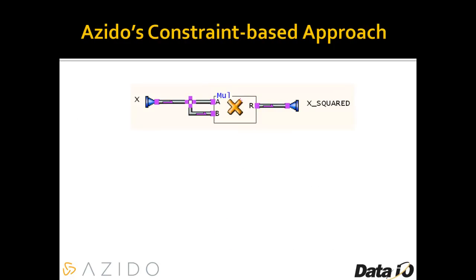Azito was created to work with these different types of systems. And as you can see right away, Azito is a different style of programming language — it's not text-based, it's graphical. Here's our simple squared algorithm: we have a value X coming in, and we multiply it by itself to create X squared. The connections between these various blocks are called transports — a way of moving information or data. A transport could carry a single bit, a floating point or complex number, an array, or even communicate to a COM or ActiveX application.